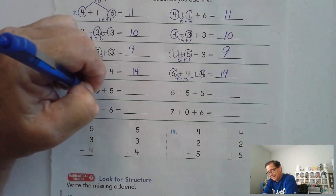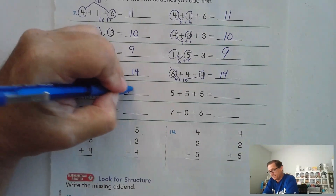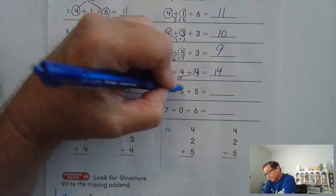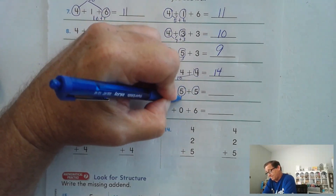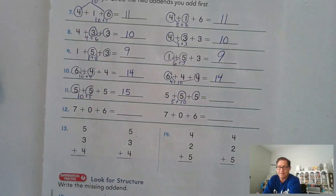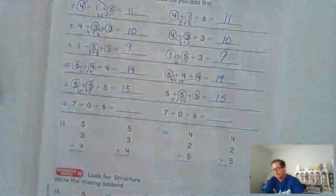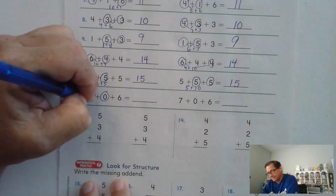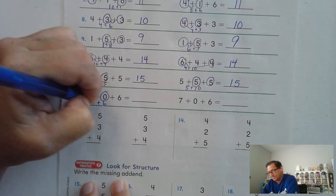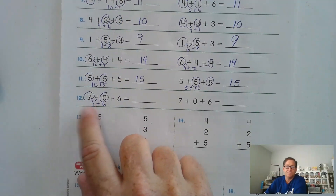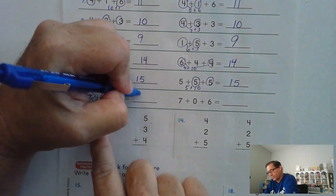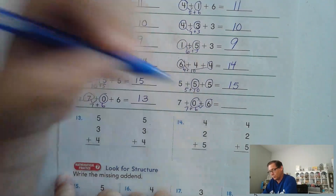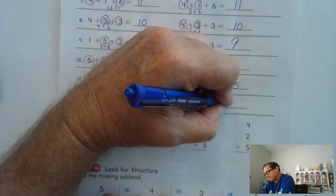Five and five is ten, and ten and five is fifteen. No matter how I combine these, I'm still going to have a sum of ten plus five. Number twelve: seven plus zero plus six. Let's combine the seven and the zero — that gives me seven. And seven plus six: six and six is twelve plus one more is thirteen. How about six and zero instead? I still get seven and six, so thirteen.